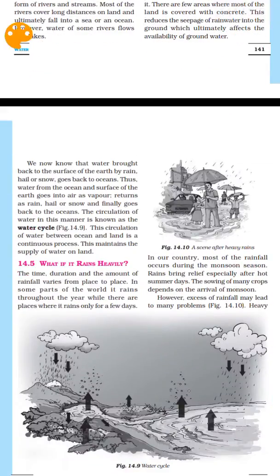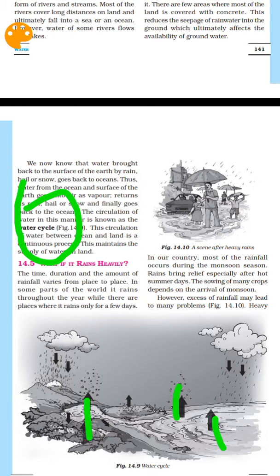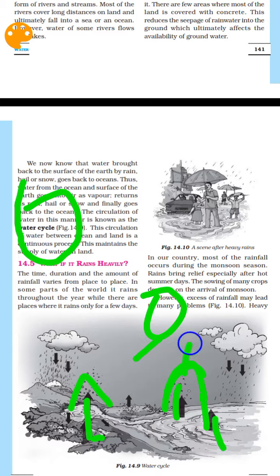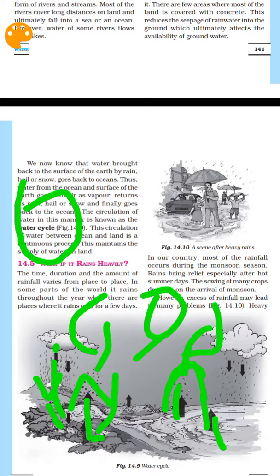Here is the water cycle diagram. Sunlight causes water to evaporate from the ground. The water vapor forms clouds. When pressure builds up in the clouds, water falls as rain. After rain falls, it flows back and the water cycle begins again.